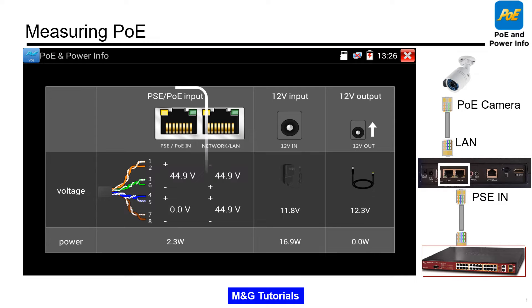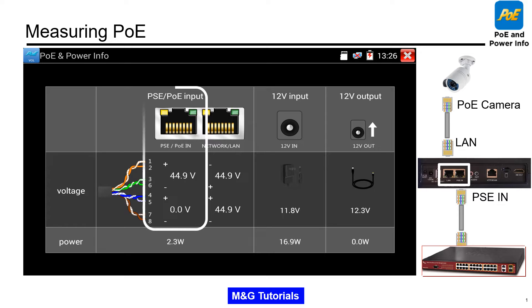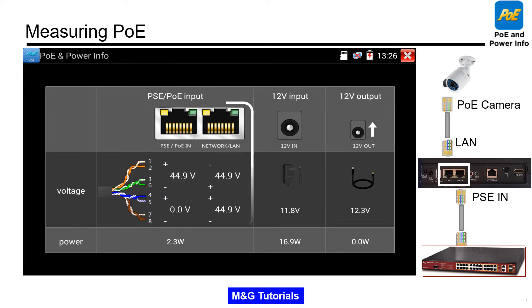Under PSE power supply ethernet, we have voltage on pins 1, 2, 3, and 6. However, on the LAN going out, we have power on all 8 pins.